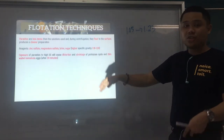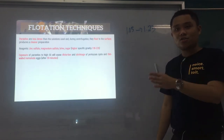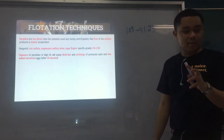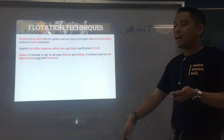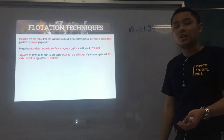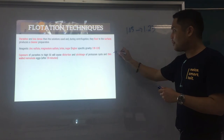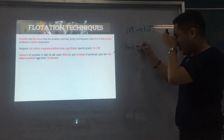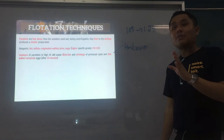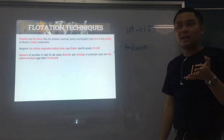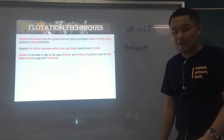Exposure of the parasites to high SG — high concentration — can cause distortion and shrinkage of protozoan cysts and your thin-walled nematode eggs, such as hookworm eggs, especially after 20 minutes. So they start to become distorted, and it's important that you examine your preparation as soon as possible.